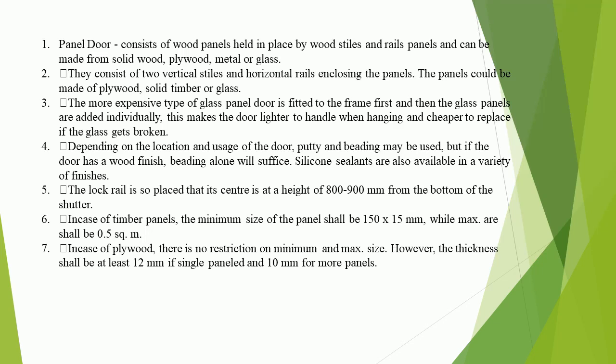The panels could be made of plywood, solid timber, or glass. The more expensive type of glass panel door is fitted to the frame first and then the glass panels are added individually, making the door lighter to handle when hanging and cheaper to replace if the glass gets broken.